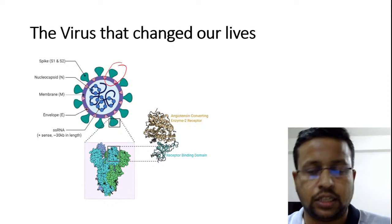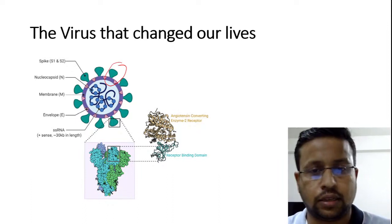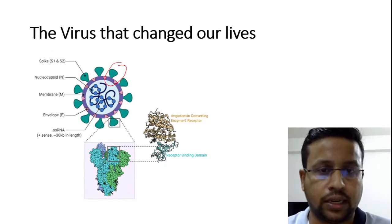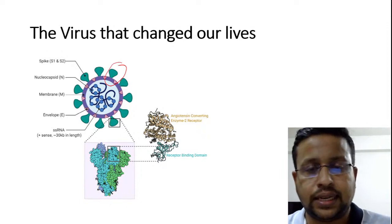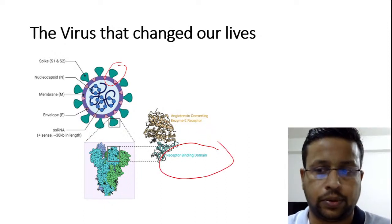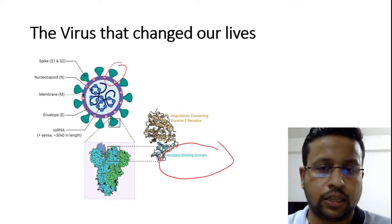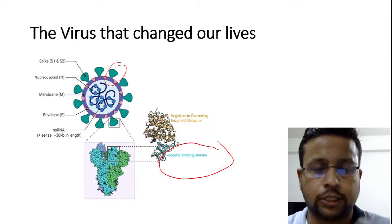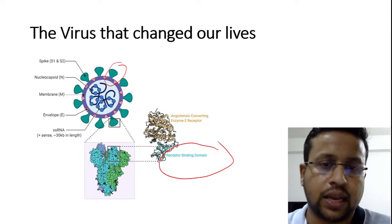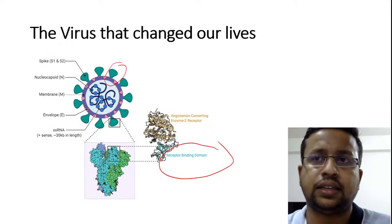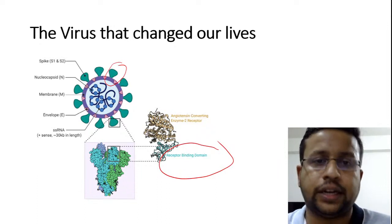The spike protein is very important because it is through the spike protein that the virus binds to the ACE2 (angiotensin converting enzyme 2) receptor to enter our cells. There is a particular part on the spike protein called the receptor binding domain (RBD), and it is through the RBD that SARS-CoV-2 actually enters the human cell. Any structural changes in this protein will affect the clinical features as well as the transmissibility of the virus.